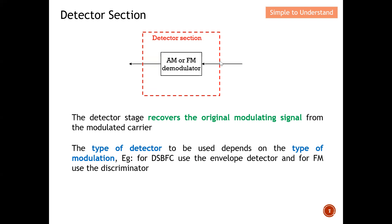The detector stage recovers the original modulating signal from the modulated carrier. After passing through the detector section, the modulated signal is converted back into the modulating signal — the information signal we want to recover. The type of detector used depends on the type of modulation. For AM (double sideband full carrier), an envelope detector is used. For FM, a discriminator is used to recover the FM modulated signal.